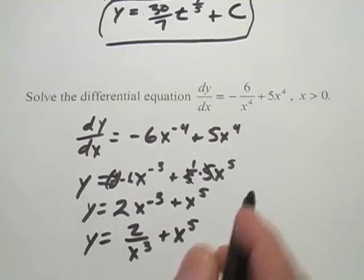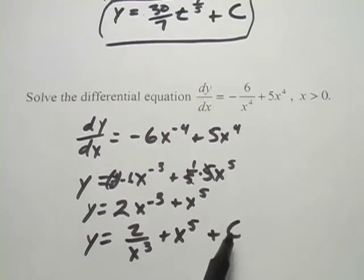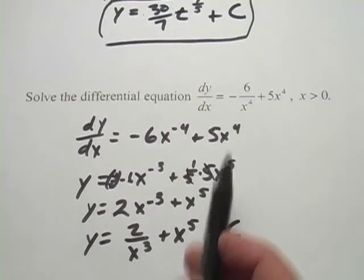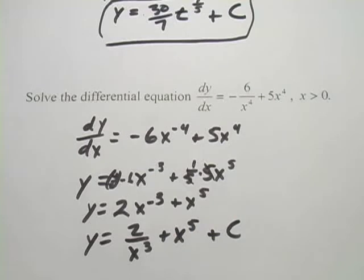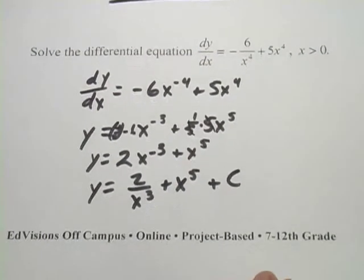And then we have to remember we need the plus big C here to denote that this could be any number of functions, depending on what constant you add to it, that would have this as a derivative. So that's a little bit of work with taking antiderivatives.